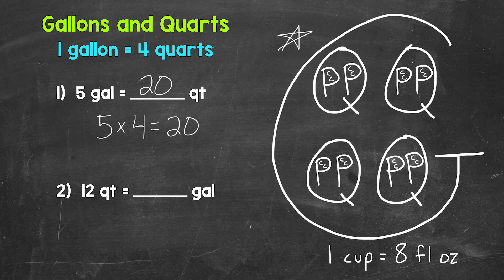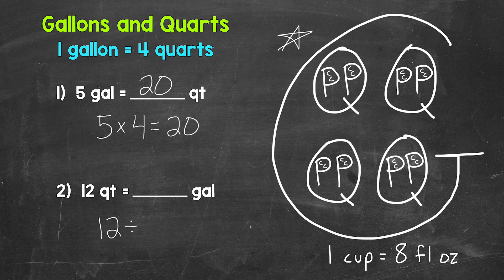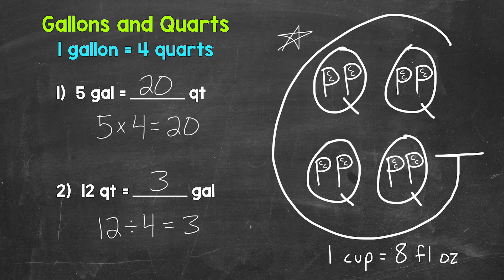Let's move on to number two: 12 quarts equals how many gallons? Each group of four quarts equals a gallon, so how many groups of four are in 12 quarts? We need to divide — 12 divided by four. When going from quarts to gallons, we divide by four. 12 divided by four gives us three, so 12 quarts equals three gallons.